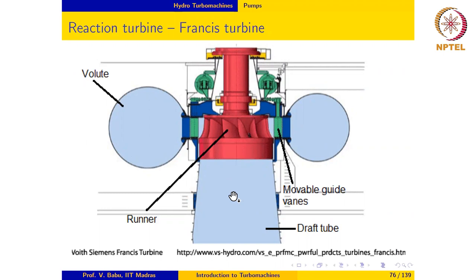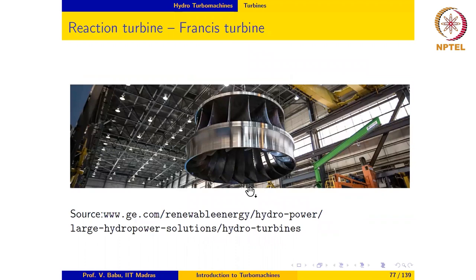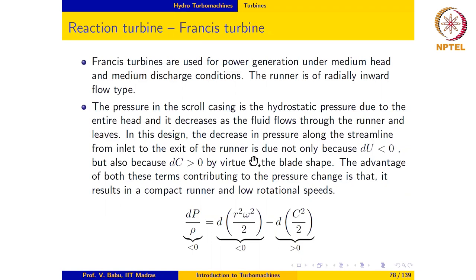A close-up view of the Francis turbine runner is shown here. It can be seen that this is the entry to the runner and this is the exit, so the water enters radially, it's a radially inward flow turbine and exits in this direction axially. These are usually massive runners and are capable of producing large amounts of power. So they are used under medium head and medium discharge conditions and the runner, as we have already said, is radially inward flow type.